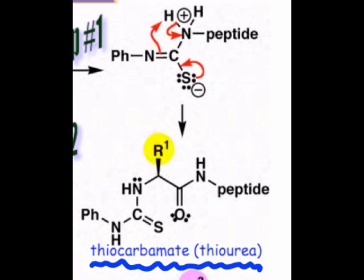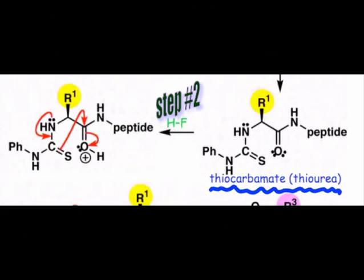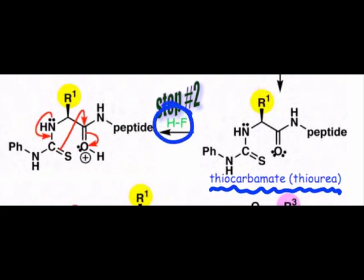Where things get interesting is in the next step, when hydrofluoric acid is combined with the thiocarbamate. Protonation of the carbonyl oxygen occurs, making it more electrophilic, and the nucleophilic sulfur atom in the thiocarbamate portion of the molecule attacks the carbonyl carbon.